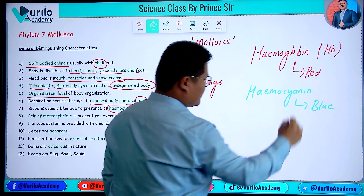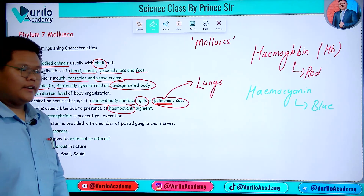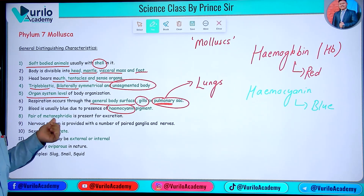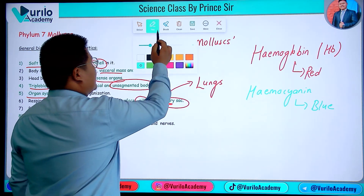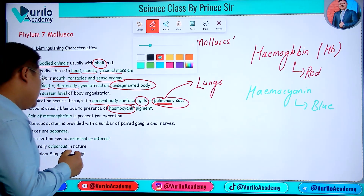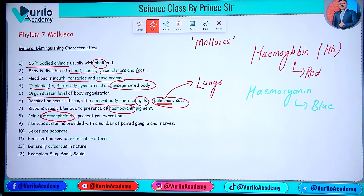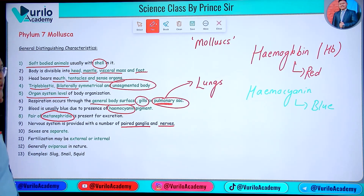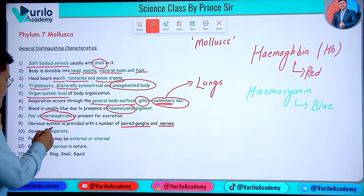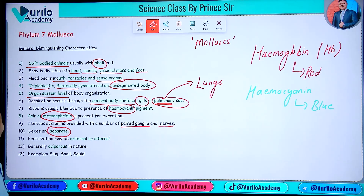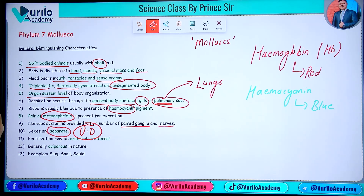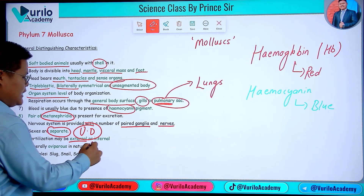Hemocyanin gives blue color to molluscan blood, unlike hemoglobin in human beings. This is a key point. Excretion occurs through a pair of metanephridia. The nervous system consists of paired ganglia.